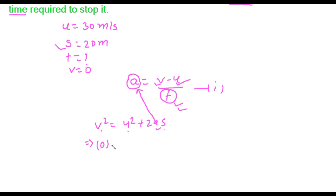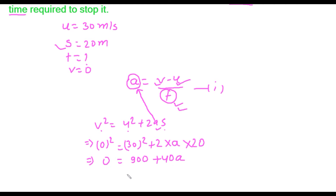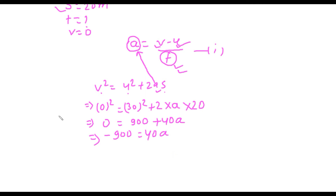So v is 0, u is 30, and s is 20. Substituting: 0² = 30² + 2 × a × 20, which gives 0 = 900 + 40a. Therefore 900 = −40a, and a = −900 / 40 = −22.5 meters per square second.